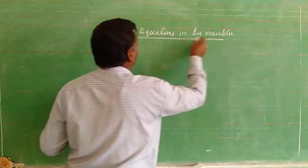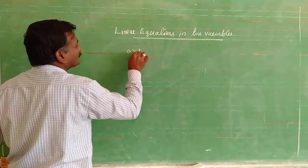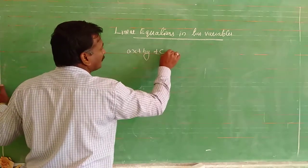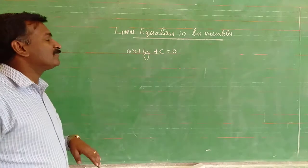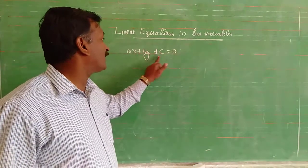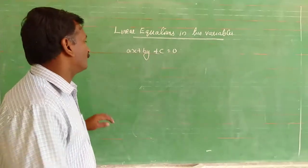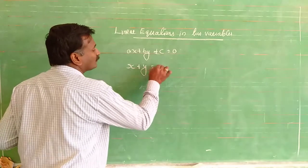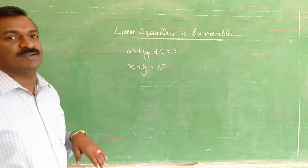The general form is ax plus by plus c equals zero. Last year we were studying ax plus by plus c is equal to zero. One more example is x plus y is equal to 5.